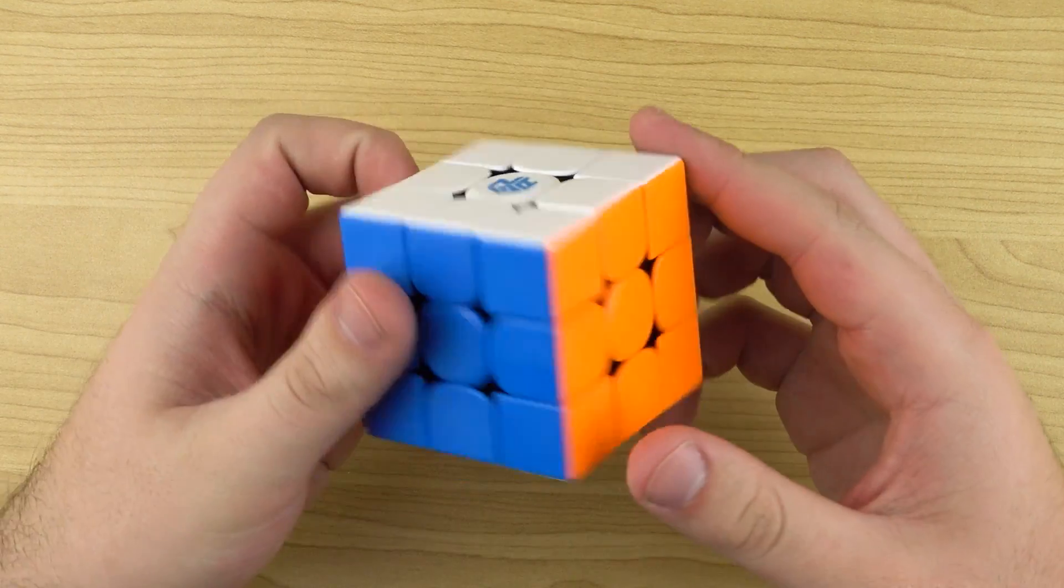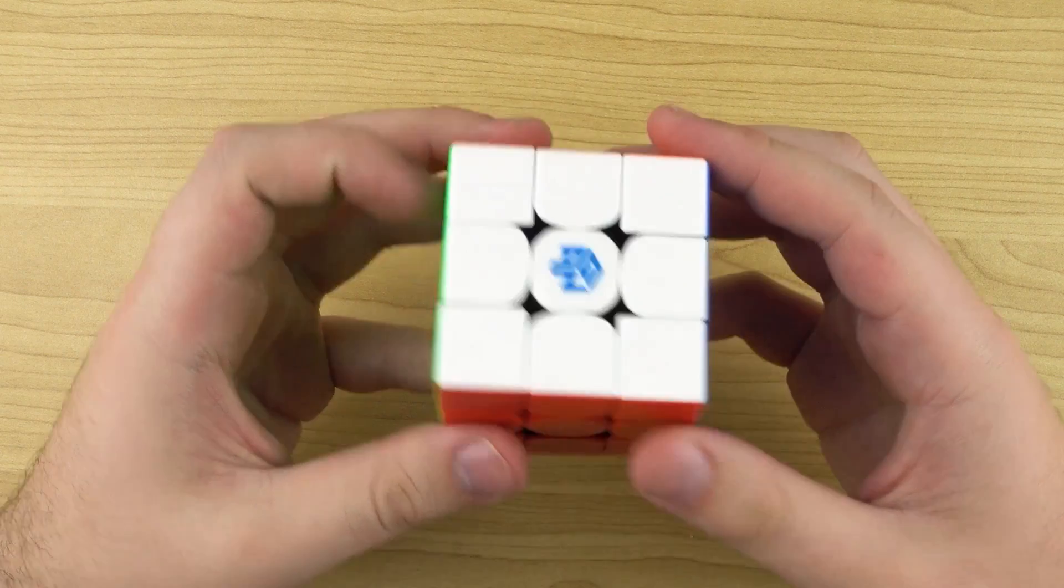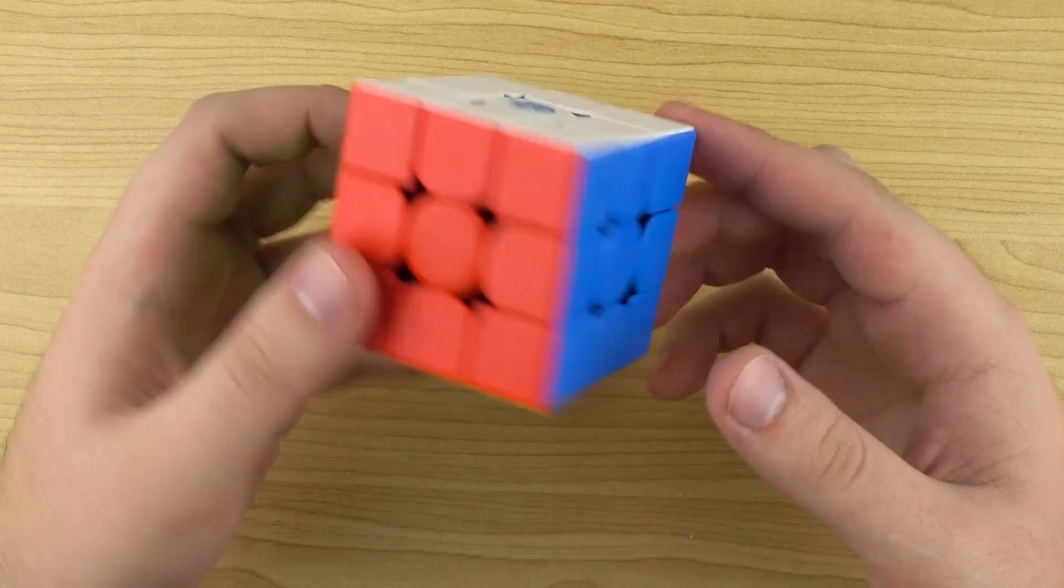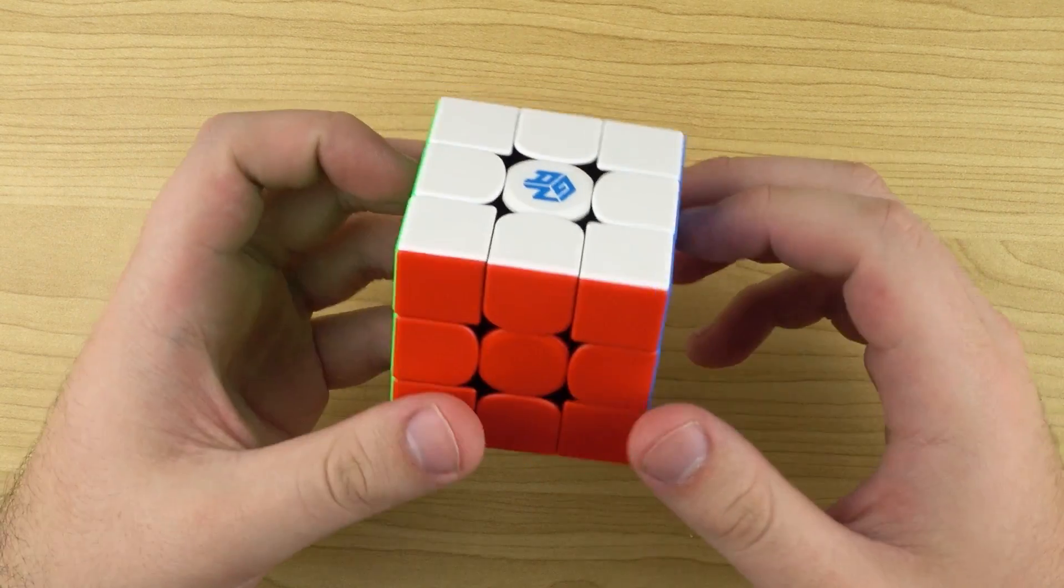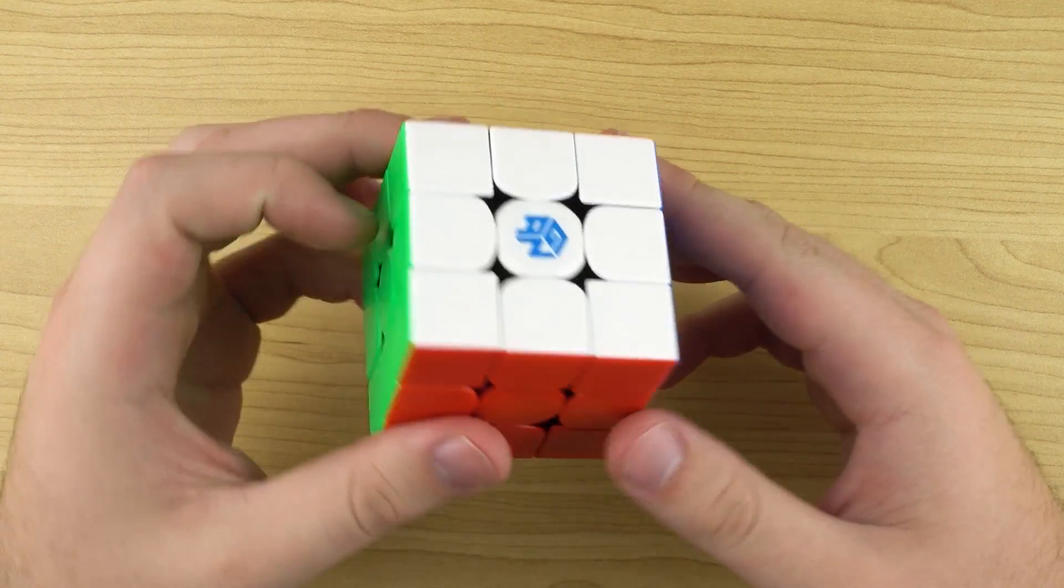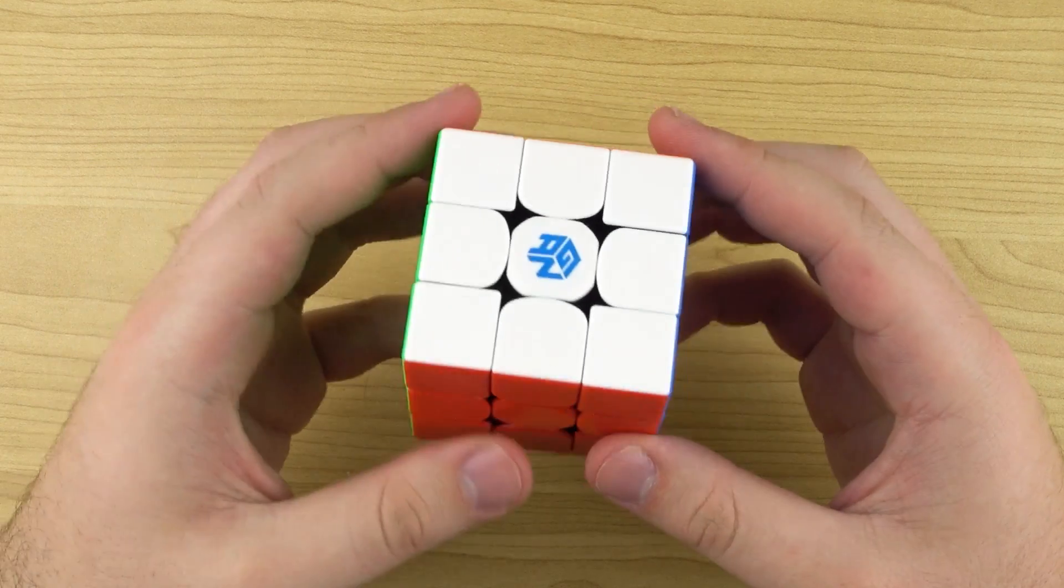It feels pretty solid, it sort of actually feels like a GAN XS but a heavier version. All I know about this puzzle is it's GAN's budget 3x3, the latest version and the shades are matte. Let's do some first turns.